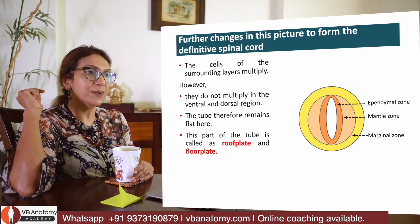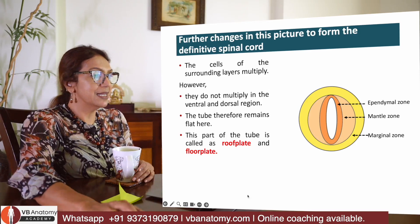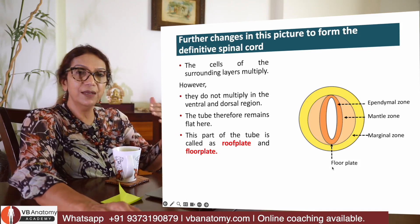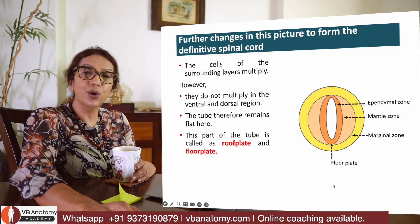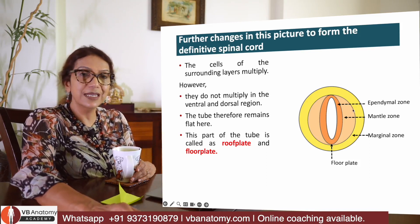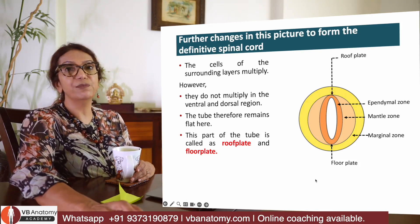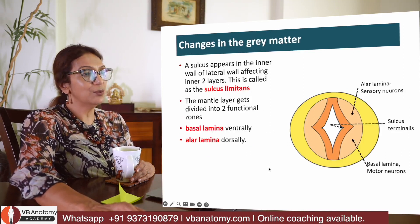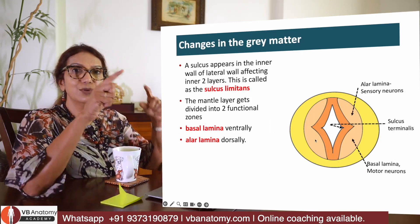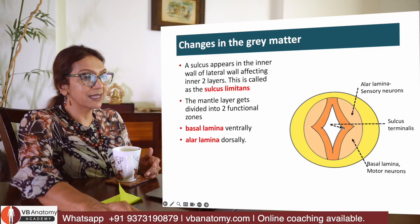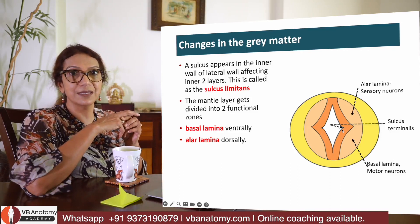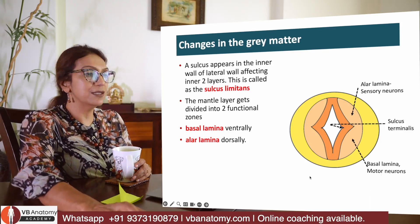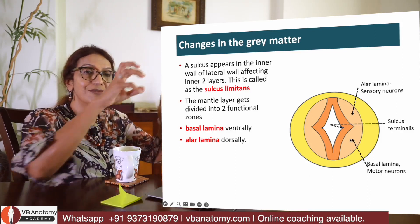When this growth takes place, there is limited growth at the top and bottom. The anterior-most and posterior-most parts do not grow as much as the sides, and thus a floor plate and a roof plate are formed. Parallelly, the ependymal layer begins to develop a sulcus — called the sulcus limitans — which divides the mantle zone into two bunches of cells.